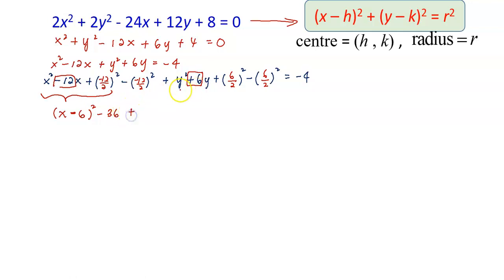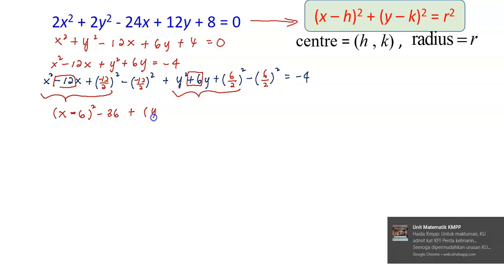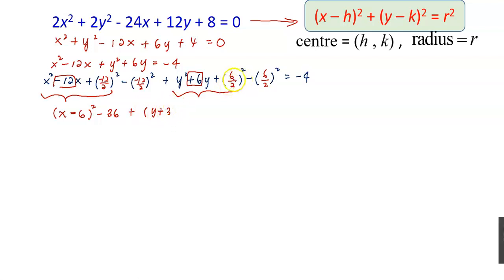For the y term, I focus on the coefficient of y, which is positive 6. Positive 6 divided by 2 gives 3, which I fill into the bracket. So those three y terms simplify into (y + 3)². The constant is 3² = 9, giving us −9, which goes to the right-hand side.